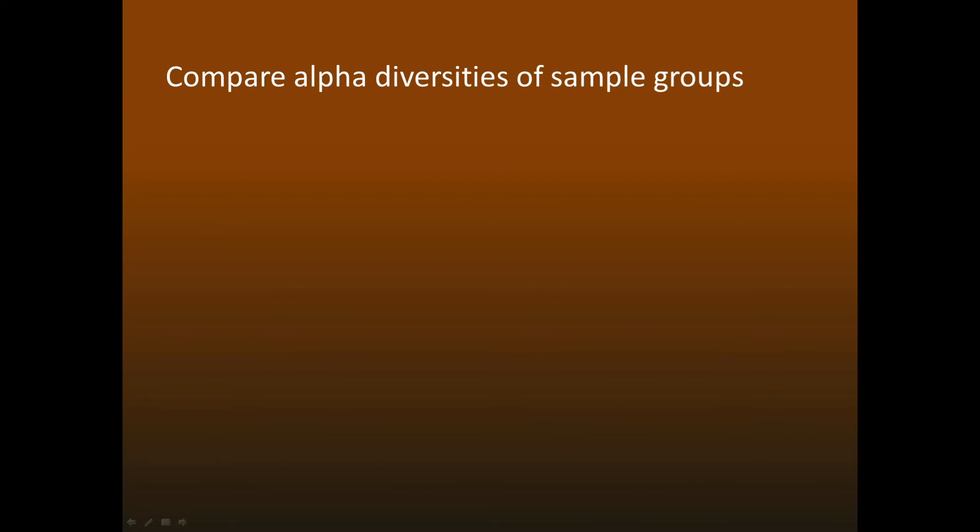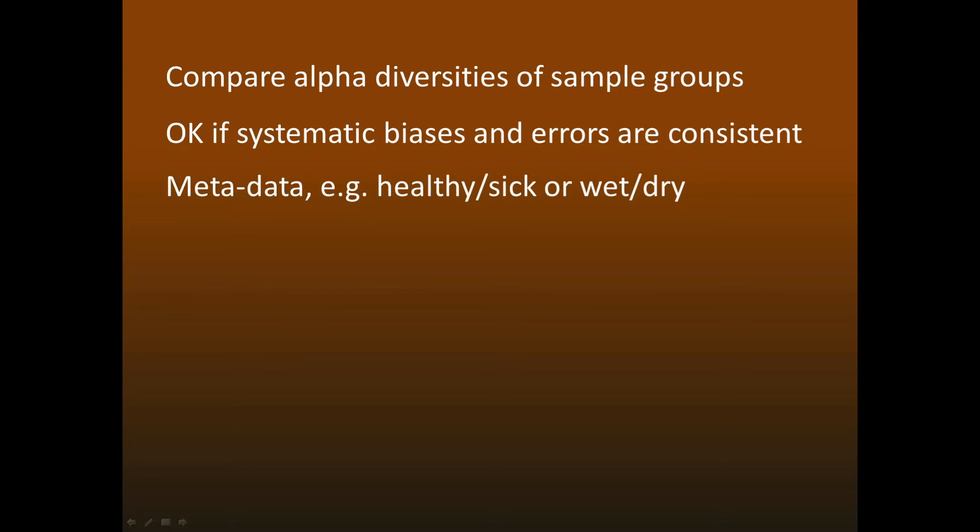While you can't measure the diversity of a single sample, it's often reasonable to compare the alpha diversities of sample groups. This is a valid procedure if the systematic errors and biases are consistent across different samples, which is typically the case if all samples were sequenced in the same run. Groups are defined by labeling samples with metadata such as healthy and sick or wet and dry. A rank sum test can be used to see if one group tends to have higher or lower diversity than another group.